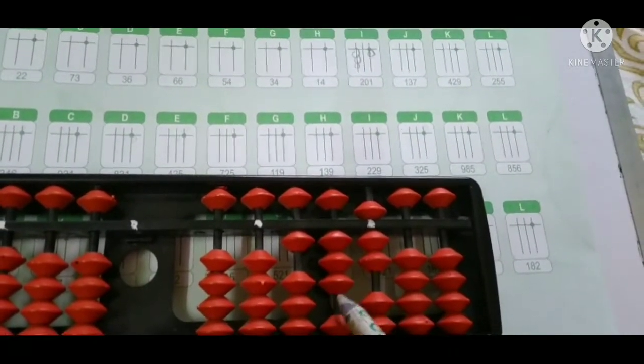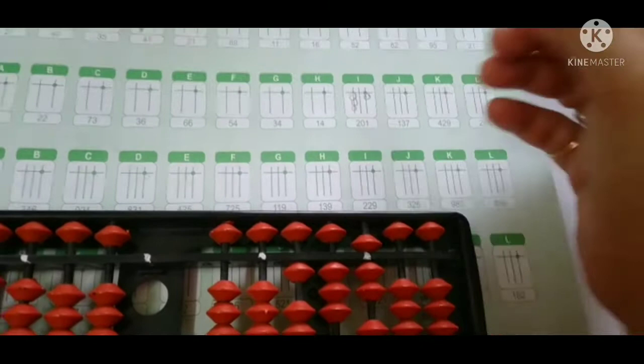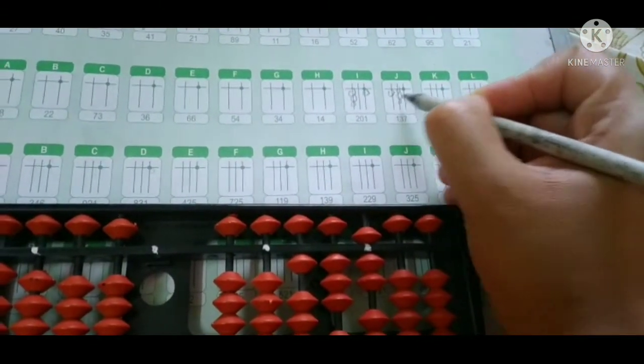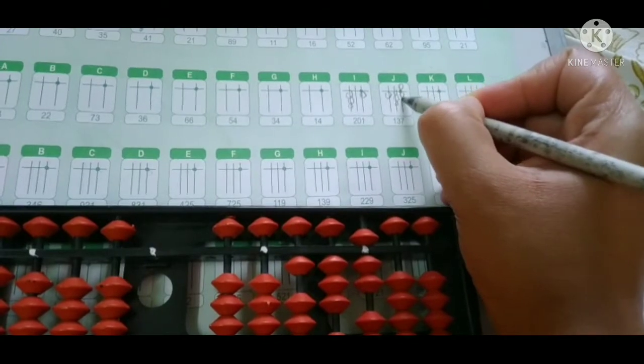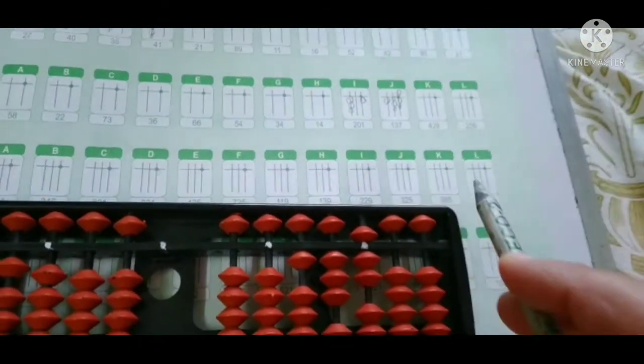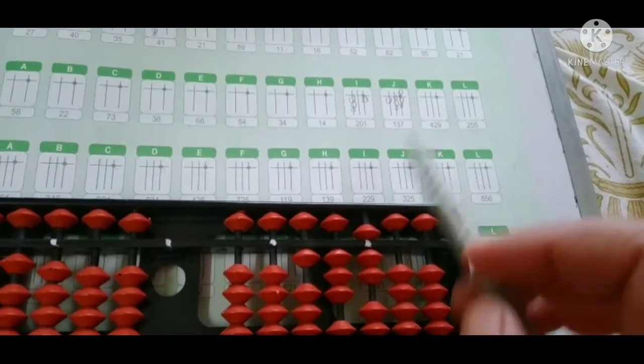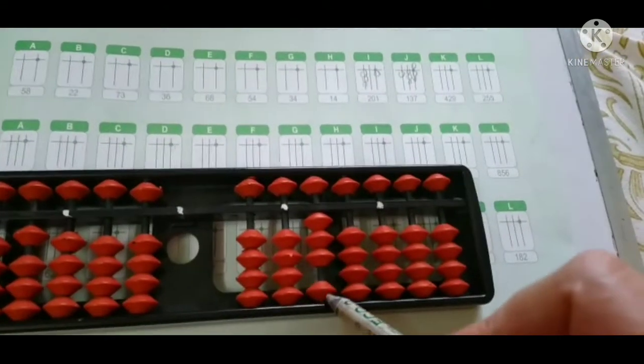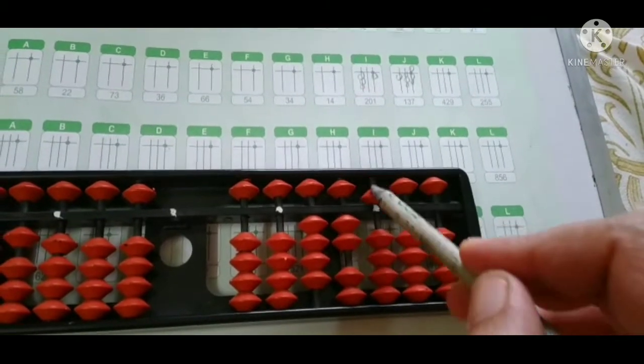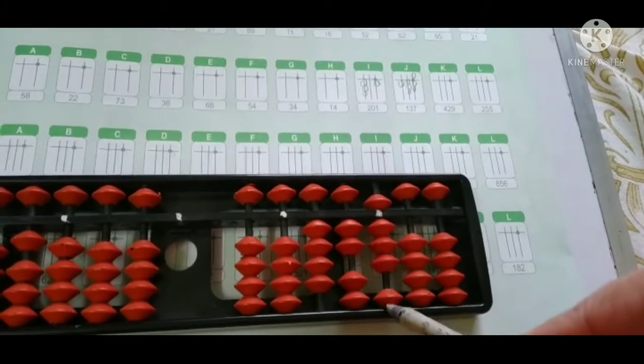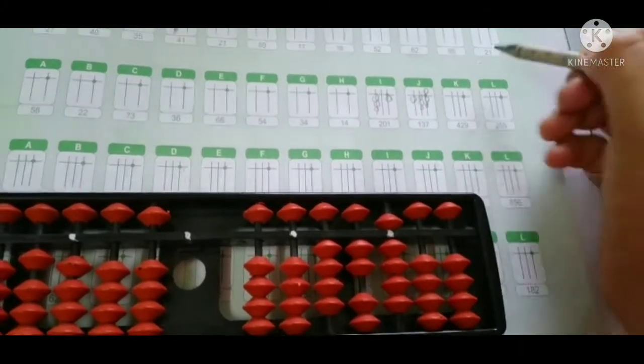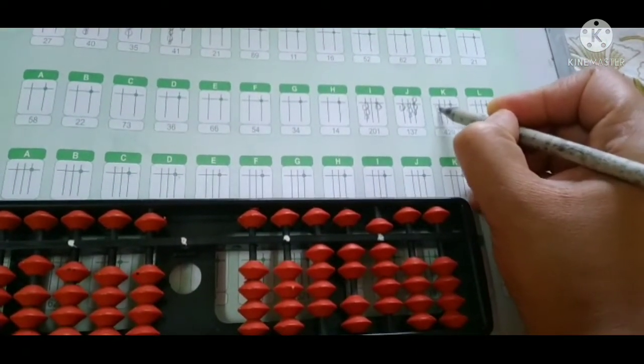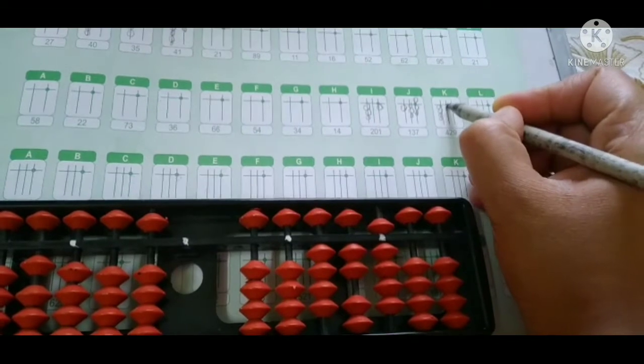And now 137. Fine. 1, 30: 5, 6, 7. Three beads should be 30, okay. So 1, 7, understood. And 429: what we have to do? 4 beads up, 2: 5, 6, 7, 8, 9. 429.